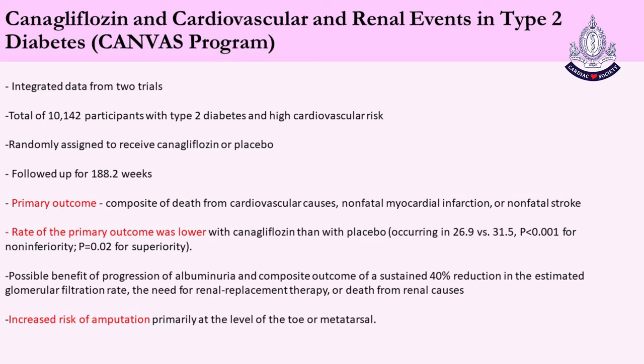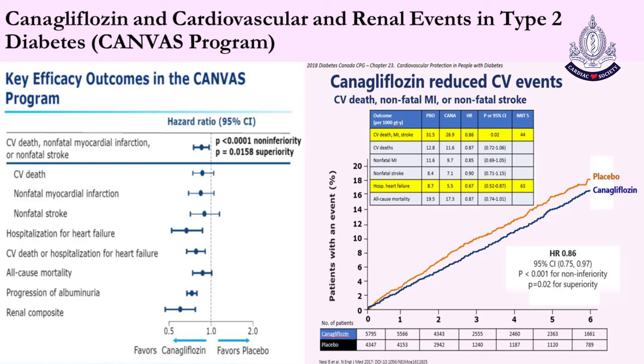Next is the CANVAS program — canagliflozin and cardiovascular and renal events. This integrated two trials (CANVAS and CANVAS-R), totaling 10,142 patients with type 2 diabetes and high CV risk, randomized to canagliflozin or placebo, followed up for 188.2 weeks. The primary outcome — composite of death from cardiovascular cause, non-fatal MI, or stroke — was lower with canagliflozin than placebo, with possible renal protection, but there was a risk of amputation primarily at the level of the toe and metatarsal. All efficacy outcomes favored canagliflozin.